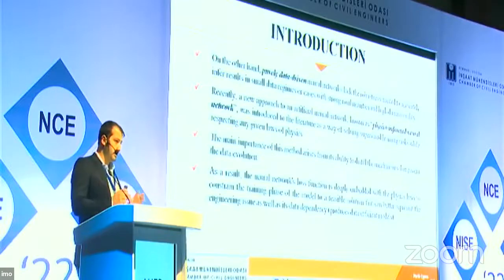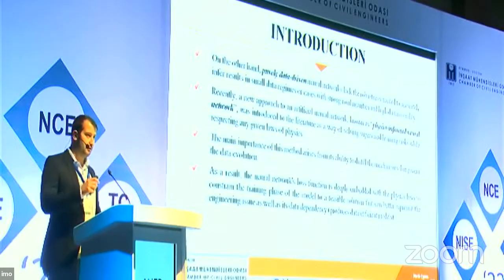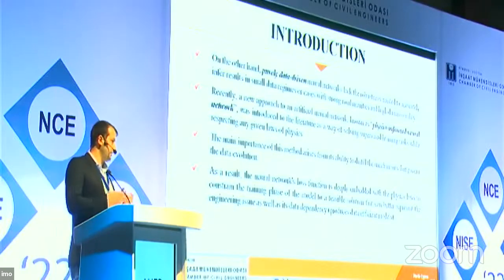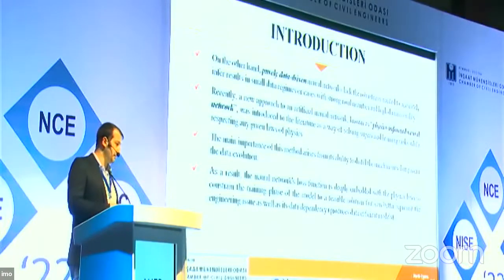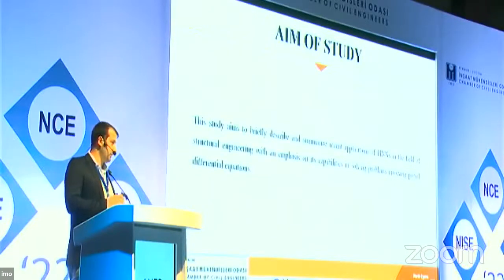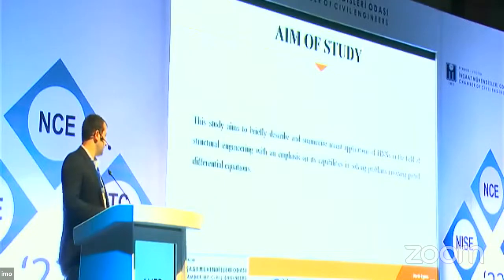In a physics-informed model, the neural network is deeply embedded with physics. Rather than being a purely data-dependent approach, it learns the physics of the problem, making it less reliant on data. This study briefly describes what physics-informed neural networks are, summarizing them from recent publications and clarifying the differences between physics-informed and purely data-driven neural networks.